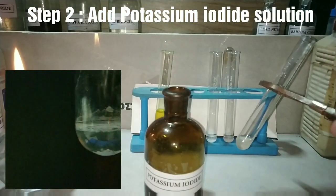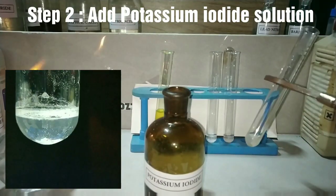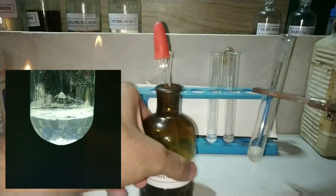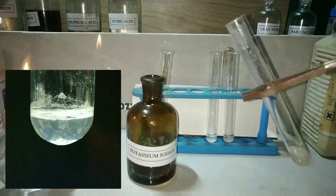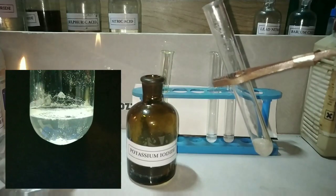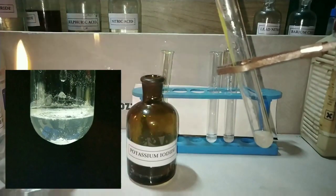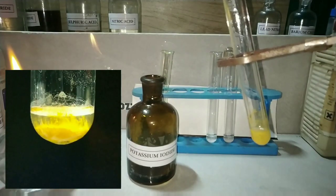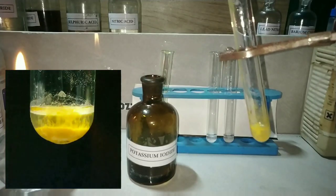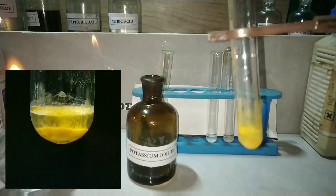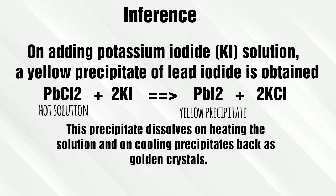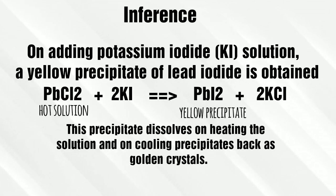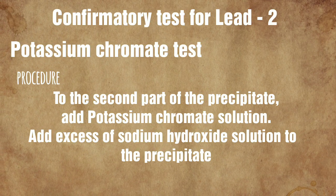The next step is to add the potassium iodide solution. This is a peculiar reaction — on adding potassium iodide, we obtain a yellow precipitate which is soluble in hot solution, and on cooling it precipitates out as golden yellow crystals. This is the classical experiment called the 'golden drain.' You can see the bright yellow color on adding the potassium iodide solution. A displacement reaction took place, leading to formation of the yellow precipitate of lead iodide.